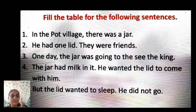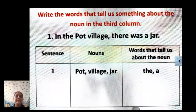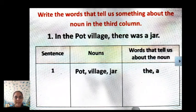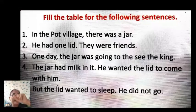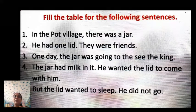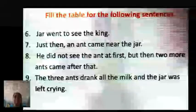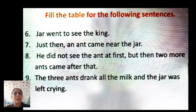Come back to sentence one: 'In the pot village there was a jar.' The nouns are pot, village, jar. Write the words around the noun that tell us about the noun. Same way, think about sentence two — what are the nouns? Write them down and write the words around the noun. Complete all the way till sentence nine. Do it by yourself.